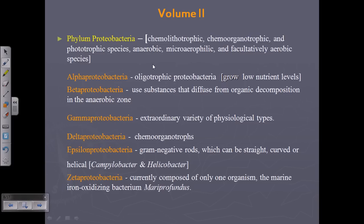Now let us talk about volume two of Bergey's Manual of Taxonomy. The entire phylum is devoted to Proteobacteria because they have different varieties of food habits, motility, and characteristics. They are divided into alpha, beta, gamma, delta, epsilon, and zeta Proteobacteria depending on these characteristics.